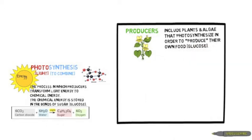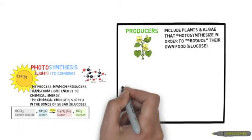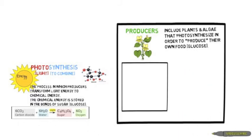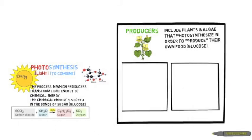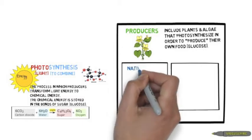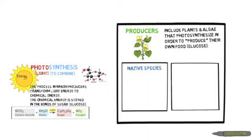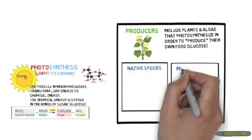In this activity we will discuss two types of producers: producers that are a native species and a producer that is an invasive species.